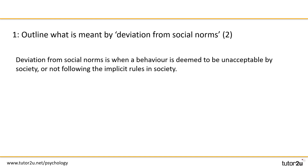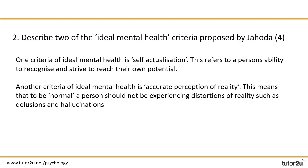Some suggested answers: deviation from social norms is when a behaviour is deemed to be unacceptable by society or is not following implicit rules in society. For question two, one criterion of ideal mental health is self-actualisation — this refers to a person's ability to recognise and strive to reach their own potential. If we had stopped there we would have only offered one criterion when the question asks for two, so a second criterion should be added to fulfil the requirements of the question.